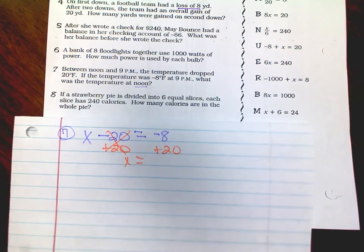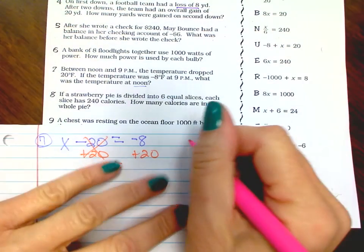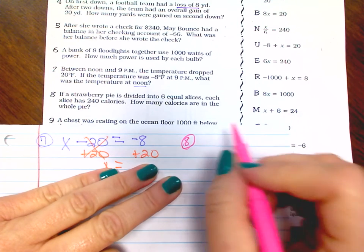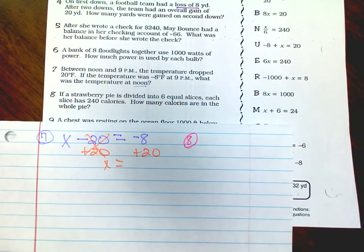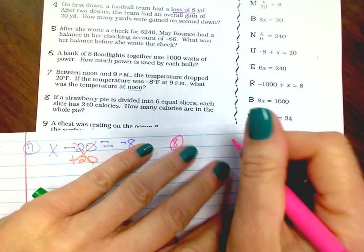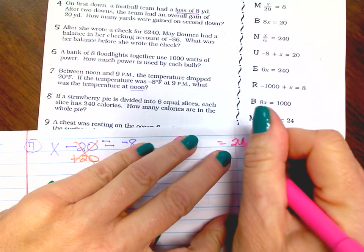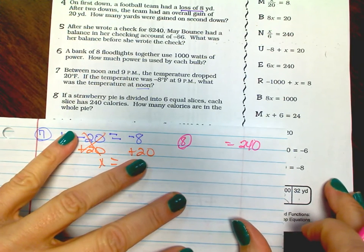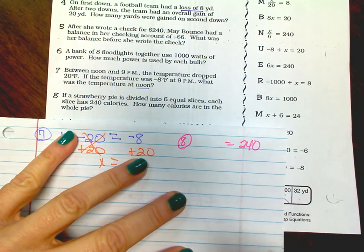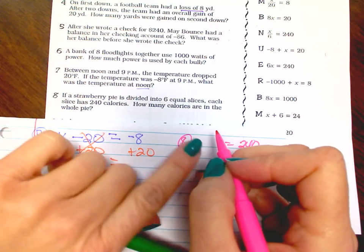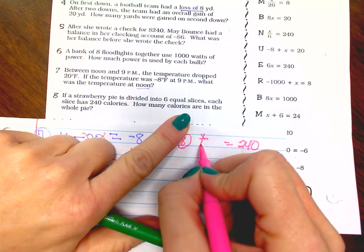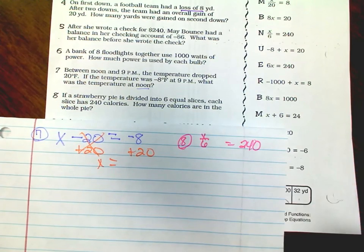Number eight: if a strawberry pie is divided into six equal slices, each slice has 240 calories. How many calories are in the whole pie? So the total was 240 calories and the pie was divided into six equal slices. How many calories are in the whole pie?